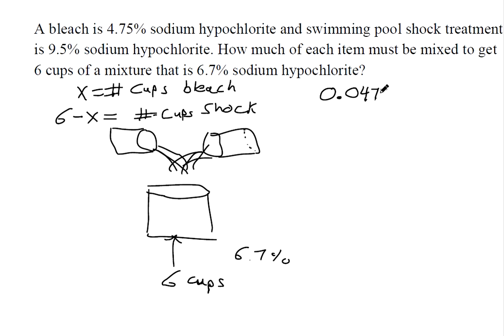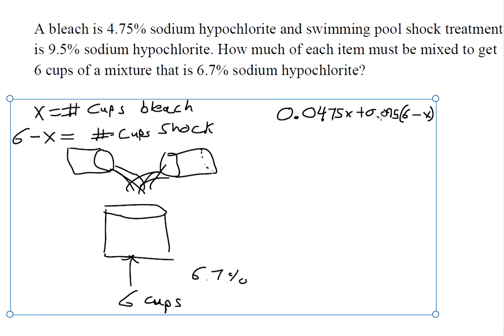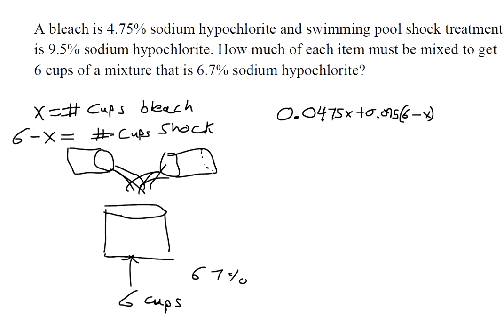0.0475 is the decimal form of the first percentage. This represents the amount of sodium hypochlorite in the bleach, and we're going to add that to the amount of sodium hypochlorite from the shock treatment. We're taking a percentage times an amount plus a percentage times an amount.